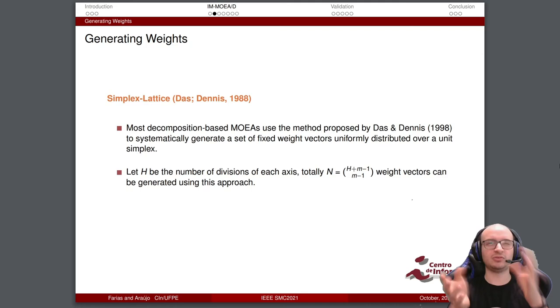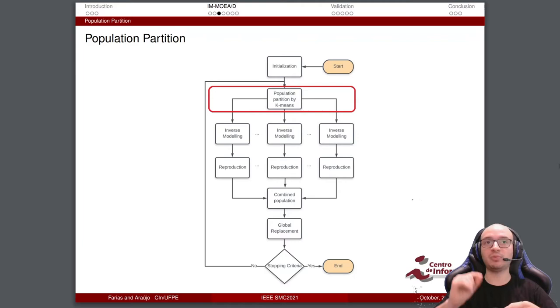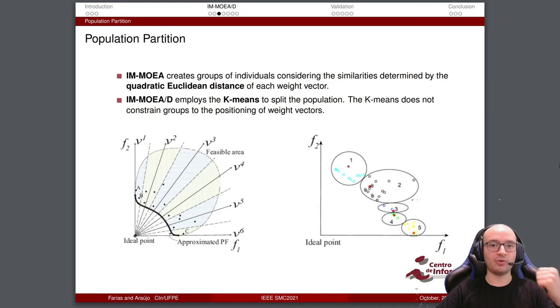Take this combination and you can generate N weight vectors using this approach. Note that the original IM-MOEA used the weight vectors in the selection of the parent process. But our proposed method used the weight only in the selection of survivors. So we have some differences from the original approach. The next step is the population partition. In the population partition, the original IM-MOEA uses the weight vectors.